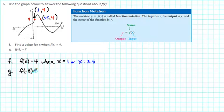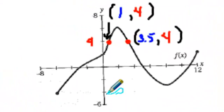What is f of negative 8? Well here, the negative 8, the value inside of the parenthesis is an x value. So what we want to do is to locate negative 8 along the x axis. And here is negative 8 on the x axis.